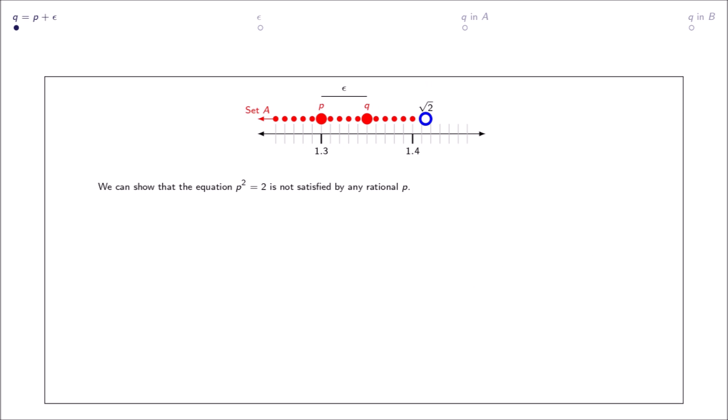We can show that the equation p squared equals 2 is not satisfied by any rational p. The red dots represent set A, which is all positive rationals p such that p squared is less than 2.